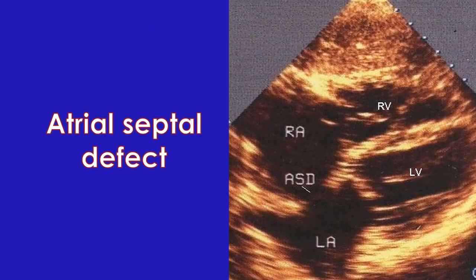Defects in the interventricular and interatrial septa will be mentioned if present, along with the location, size and shunt across it. If there is no defect, it is reported as intact interatrial and interventricular septa. Presence of a patent ductus arteriosus will also be mentioned similarly.